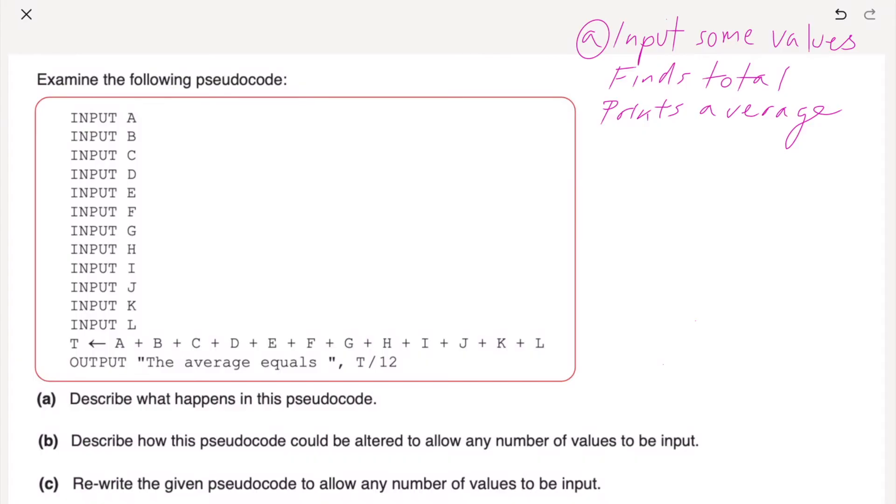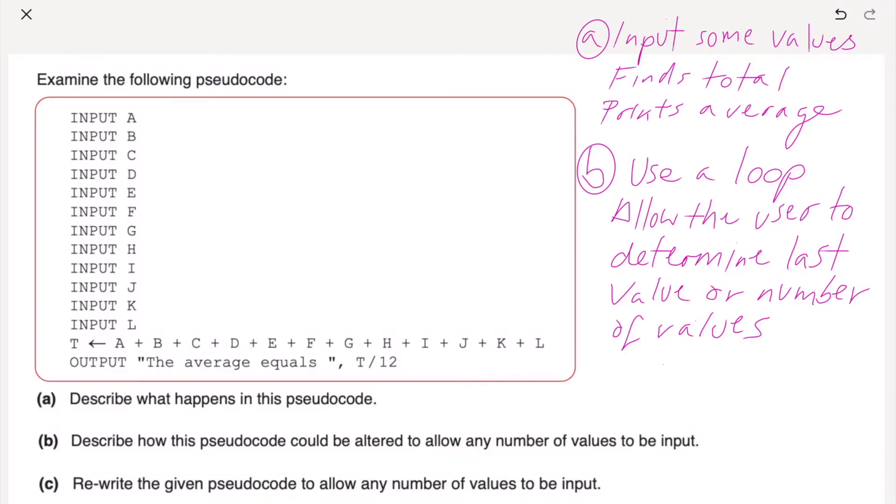Part B, describe how the pseudocode could be altered to allow any number of values to be inputted. Well, we're going to have to come up with some kind of loop system. So use a loop. We could elaborate on that: use a loop such as a while loop or a for loop. What else can we do? Allow the user to determine last value or number of values. Anything else? Keep a count of values entered or maybe keep a running total. So that would answer B.